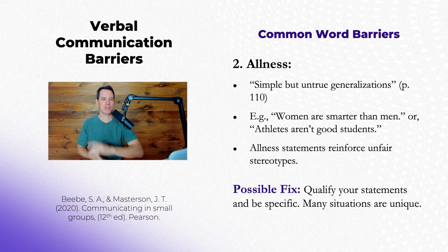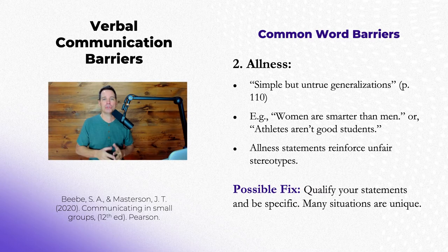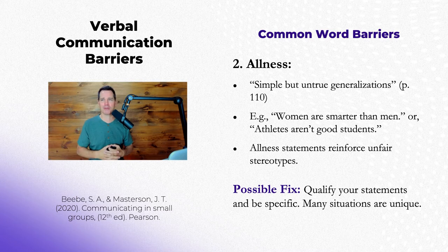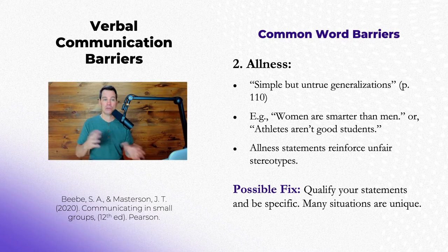The next one is allness — number two. Allness is where we make simple but untrue generalizations. This is really common, and you hear it all the time, especially about genders. Some people would say things like, oh, women are smarter than men — that's a huge allness or generalization statement — or athletes aren't good students.